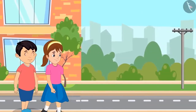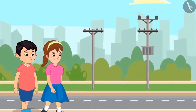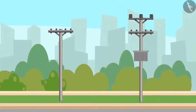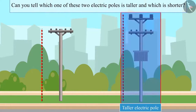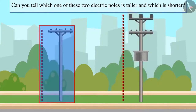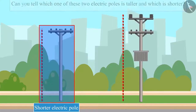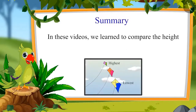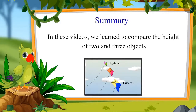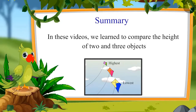After walking a little further, Chotu and Aarti saw two electric poles. So children, can you tell me which one of these two electric poles is taller and which one is shorter? Yes, this pole is taller and this one is the shorter one. That's all for today. In these videos we learned to compare the height of two and three objects. I hope you have understood this topic very well — bye children!